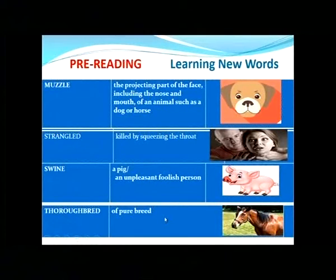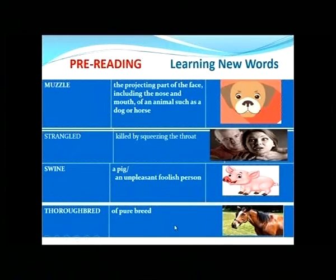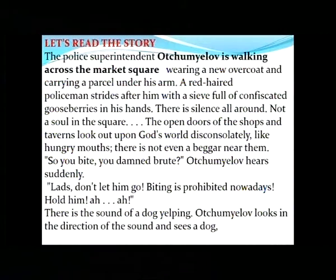'Thoroughbred': a pure breed. 'Nasal': as in the picture it is about the horse, but in our story it refers to a dog. Students, let's read the story, let's enjoy it, and then we'll discuss it after reading.